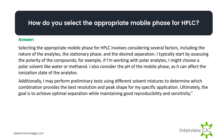How do you select the appropriate mobile phase for HPLC? Selecting the appropriate mobile phase involves considering the nature of the analytes, the stationary phase, and the desired separation. I typically start by assessing the polarity of the compounds — for polar analytes I might choose a polar solvent like water or methanol. I also consider the pH of the mobile phase as it can affect the ionization state of the analytes. I may perform preliminary tests using different solvent mixtures to determine which combination provides the best resolution and peak shape, with the goal of achieving optimal separation while maintaining good reproducibility and sensitivity.